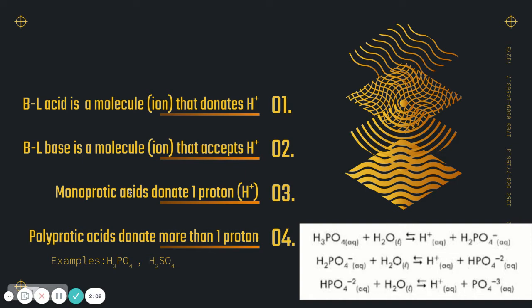Monoprotic acids means that it can only donate one hydrogen. So an example of that would be hydrochloric acid, HCl. There's only one hydrogen there to be donated. So HCl would be considered a monoprotic Bronsted and Lowry acid.